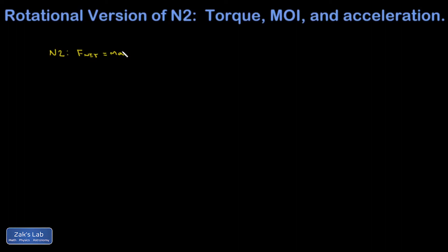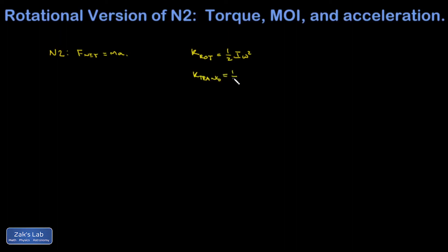Torque, which we refer to as a twisting force, is going to be replacing F net. And acceleration in linear dynamics is replaced with angular acceleration. But what about the M? We've already seen rotational kinetic energy as one-half I omega squared, and comparing that to translational kinetic energy shows us what plays the role of mass in rotational dynamics — it's the moment of inertia, I.